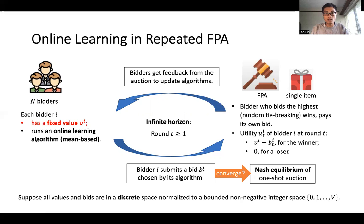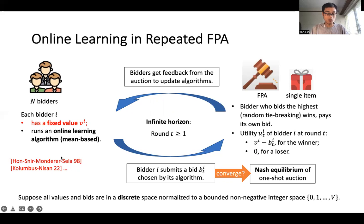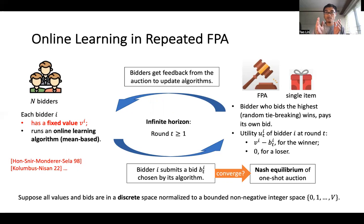Let me motivate the fixed value assumption. We are not the only ones making this assumption in multi-agent learning problems in first price auctions — there are two other works that also make it. Furthermore, in internet advertising auctions, a large number of auctions happen per second, and during that time a bidder's value cannot change very much. So the fixed value assumption is not a bad one in this context.